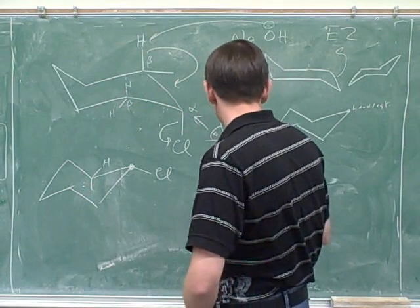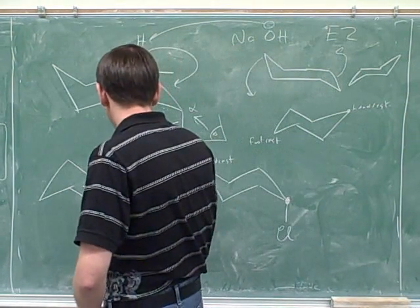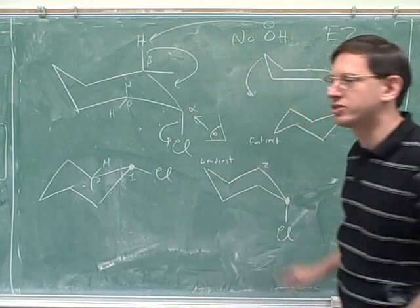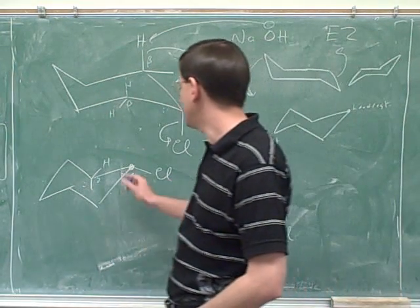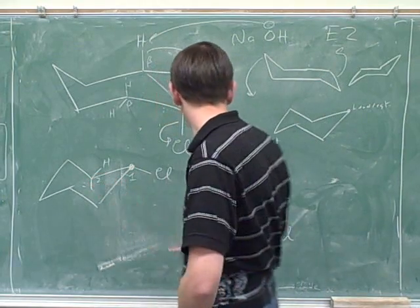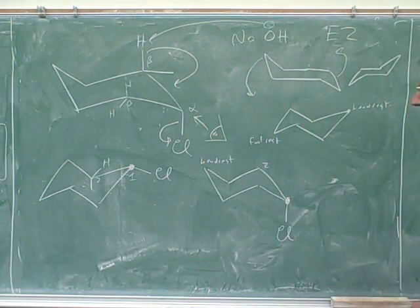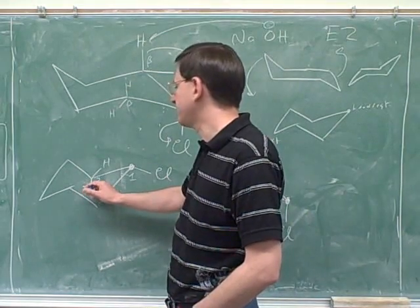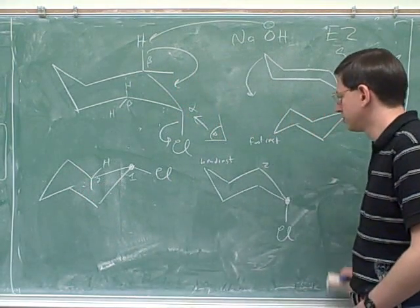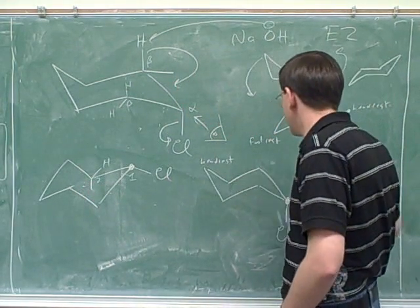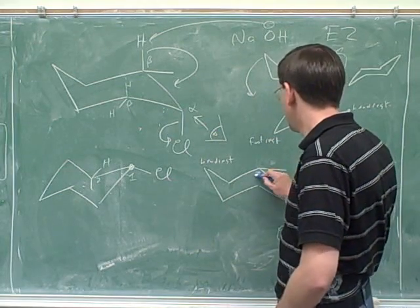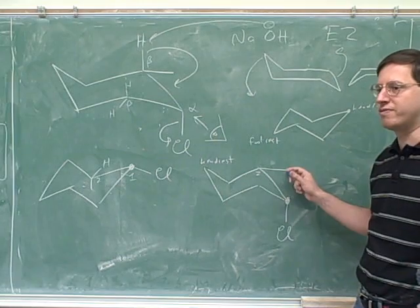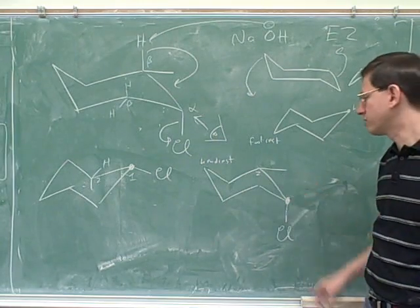Now let's take a look at this methyl group. If this is our number one carbon and this is number two, this must be the number two carbon over here. Number two is counterclockwise from number one, so here's number two counterclockwise from number one. The methyl group here is pointing down, so I have to draw the methyl pointing down over here. Notice that means now it's equatorial — that's the whole point of the chair flip: it flips axial and equatorial.